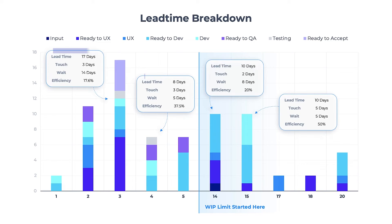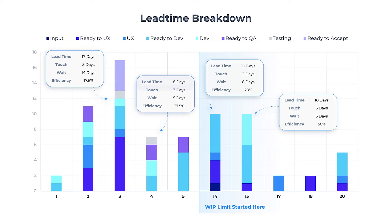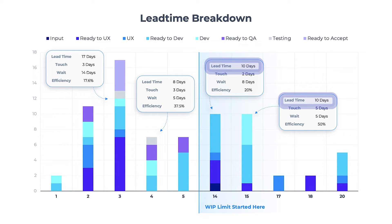The lead time is the amount of time it takes from a task received to a task delivered. Once the work-in-progress limit was used, lead times were shortened considerably, and tasks were completed much more efficiently.